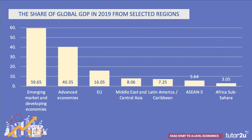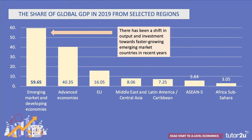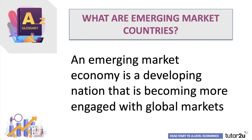Looking at regions of the world economy as a share of global GDP, the crucial thing here is that there's been a big shift in output and investment towards faster-growing emerging market and developing countries. According to this IMF chart, emerging market and developing countries now account for 60% of world output, compared with advanced high-income countries including the UK. An emerging market economy is a developing nation that's becoming more engaged and connected in terms of trade, tourism, and capital investment with the major global markets.